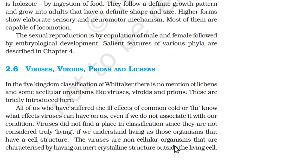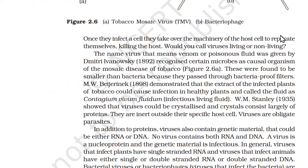2.6 Viruses, Viroids, Prions, and Lichens. In the five-kingdom classification of Whittaker, there is no mention of lichens and some acellular organisms like viruses, viroids, and prions. Viruses did not find a place in classification since they are not considered truly living. Viruses are non-cellular organisms characterized by having an inert crystalline structure outside the living cell. Once they infect a cell, they take over the machinery of the host cell to replicate themselves, killing the host.